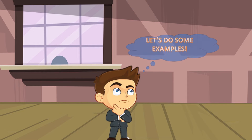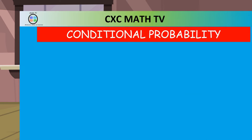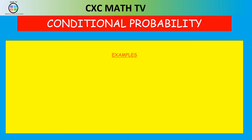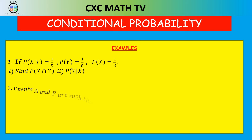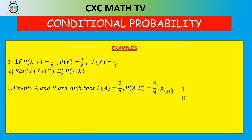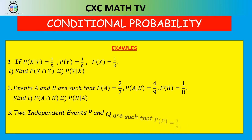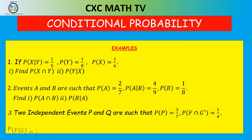Look at question one: the probability of X given Y is equal to one over five, the probability of Y is one over eight, and the probability of X is one over six. Find the probability of X∩Y, and the probability of Y given X. We also have question two and question three. We're going to start with question one.